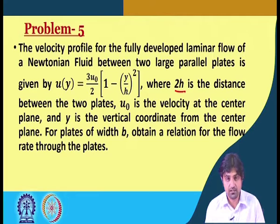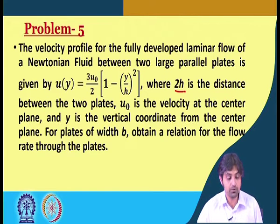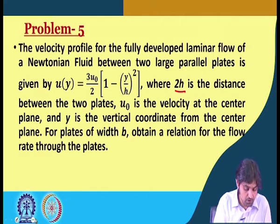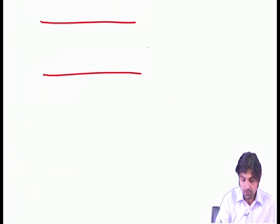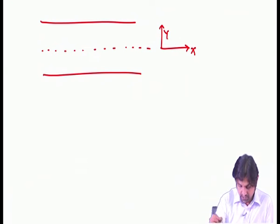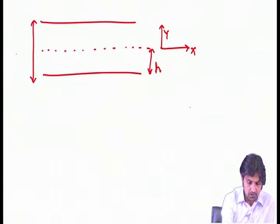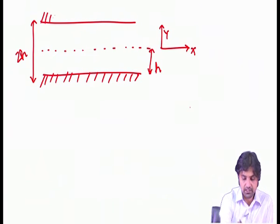Importantly, the frame of reference — the x and y axes — starts from the middle between the plates, not at the bottom. For plates of width b, we need to obtain a relationship for the flow rate through the plates. Drawing the setup: the centre line is the x-axis, the y-axis points upward, the distance from the centre to each plate is h, so the total thickness is 2h. The width b will be used when calculating the discharge.